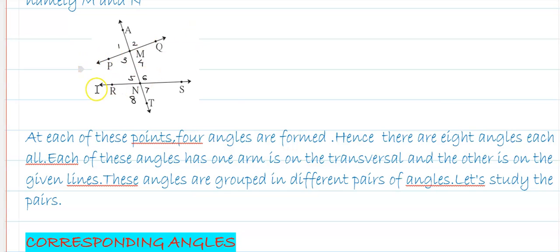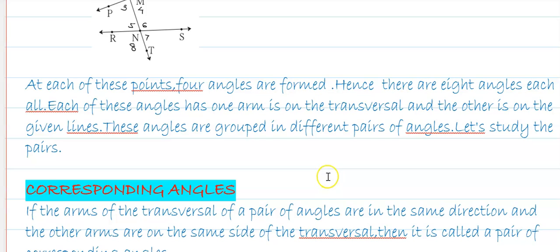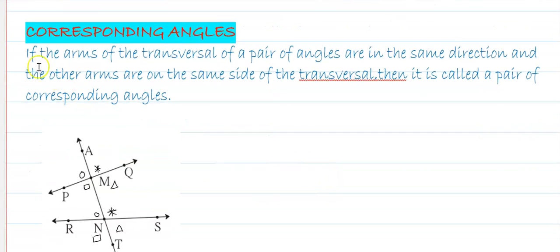The given lines are line PQ and line RS. If we consider angle AMP, one arm is on the transversal and the other arm is on the given two lines. These angles are grouped into different pairs of angles, which is interesting. Let us study the pairs of these angles. The first pair is corresponding angles.